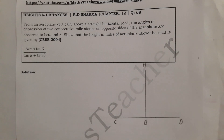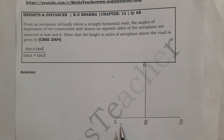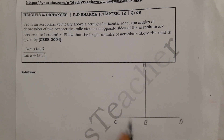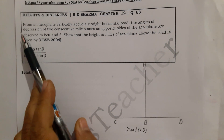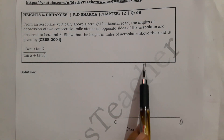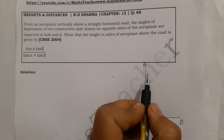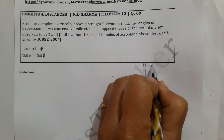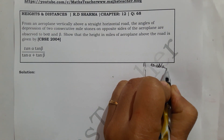First, we note that it is a straight horizontal road, so we have line CD as our road. From an aeroplane vertically above, we take a point — let's call it A — directly above the road. This point represents the aeroplane.